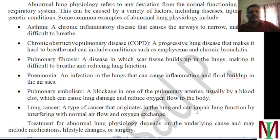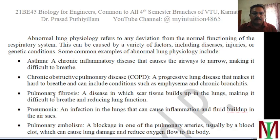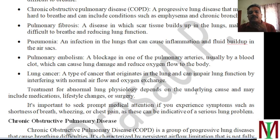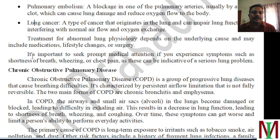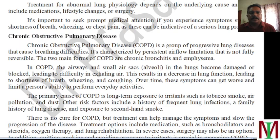Abnormal lung physiology refers to any deviation from the normal functioning of the respiratory system due to various factors like injuries or genetic conditions. Some examples are: asthma, chronic obstructive pulmonary disease (COPD), pulmonary fibrosis, pneumonia, pulmonary embolism, and lung cancer. Treatment depends upon the underlying causes and may include medications, lifestyle changes, or even surgery. It is very important to seek prompt medical attention if we experience symptoms like shortness of breath, wheezing, or chest pain — we need to consult a doctor or health specialist.